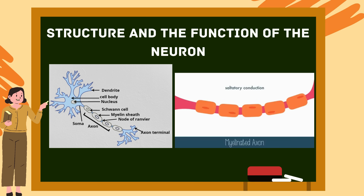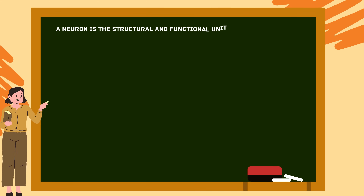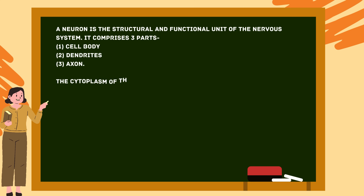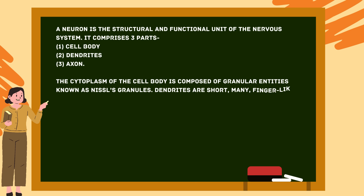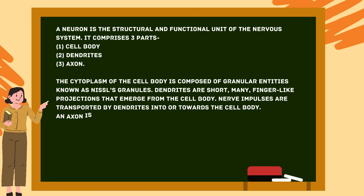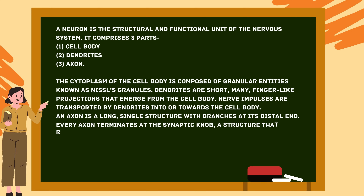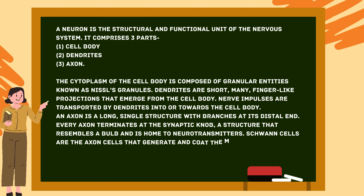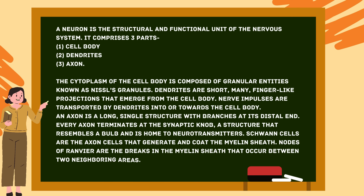A neuron is the structural and functional unit of the nervous system, comprising three parts: the cell body, dendrites, and axon. The cytoplasm of the cell body contains granular entities known as Nissl's granules. Dendrites are short, finger-like projections that transport nerve impulses towards the cell body. An axon is a long single structure with branches at its distal end, terminating at the synaptic knob — a bulb-like structure containing neurotransmitters. Schwann cells generate and coat the myelin sheath.